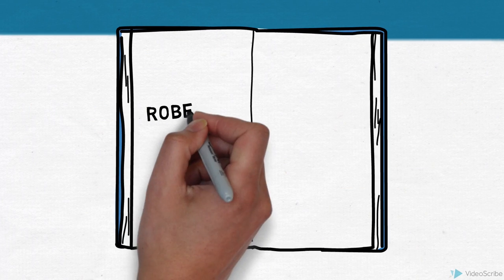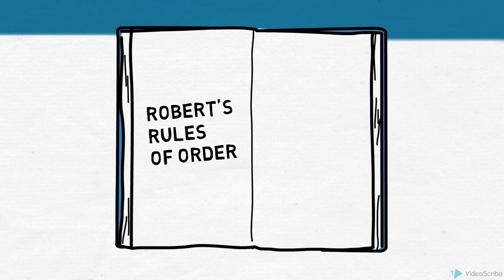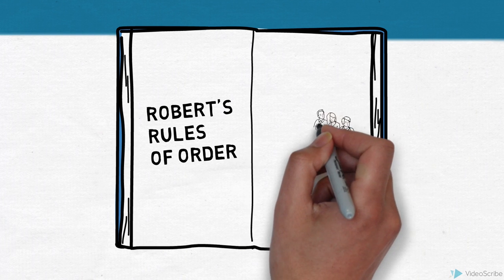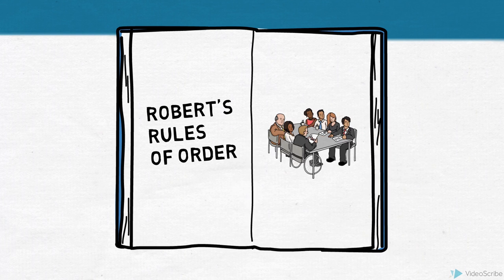At the SFSS, we rely on Robert's Rules of Order to ensure that all meetings run effectively. This video will go through the basics of Robert's Rules and how they work to make meetings more efficient.